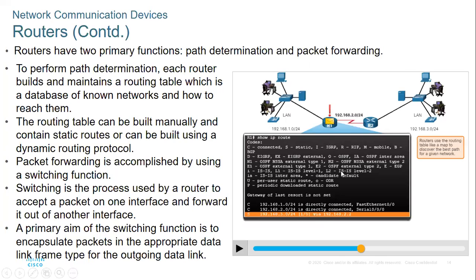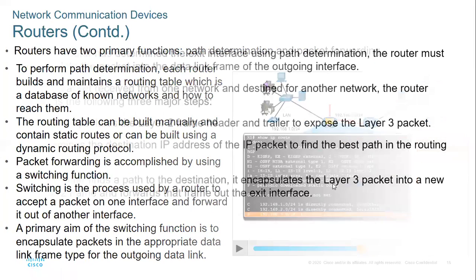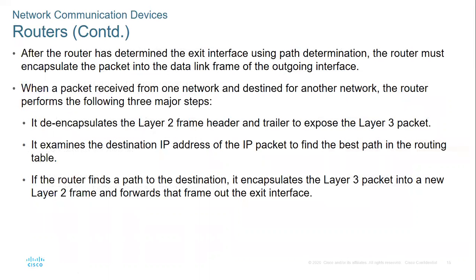In the routing table, the router calculates the best path to use to reach a certain destination. When the router receives a packet, after determining the exit interface using path information, the router must encapsulate the packet into the data link frame of the outgoing interface.